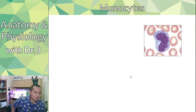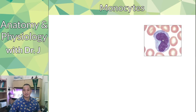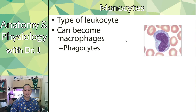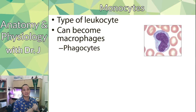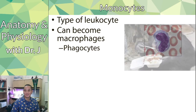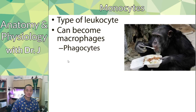Now monocytes — we have a picture of this right here. In histology it has this kind of kidney or horseshoe shape nucleus. This is a type of leukocyte, and monocytes can also become macrophages. 'Macro' means big, 'phage' means eat, so these are types of phagocytes. My mnemonic — if you know a little Spanish, 'mono' means monkey, so I like to think of monocytes as a little mono-monkey eating. So monocytes are phagocytes.